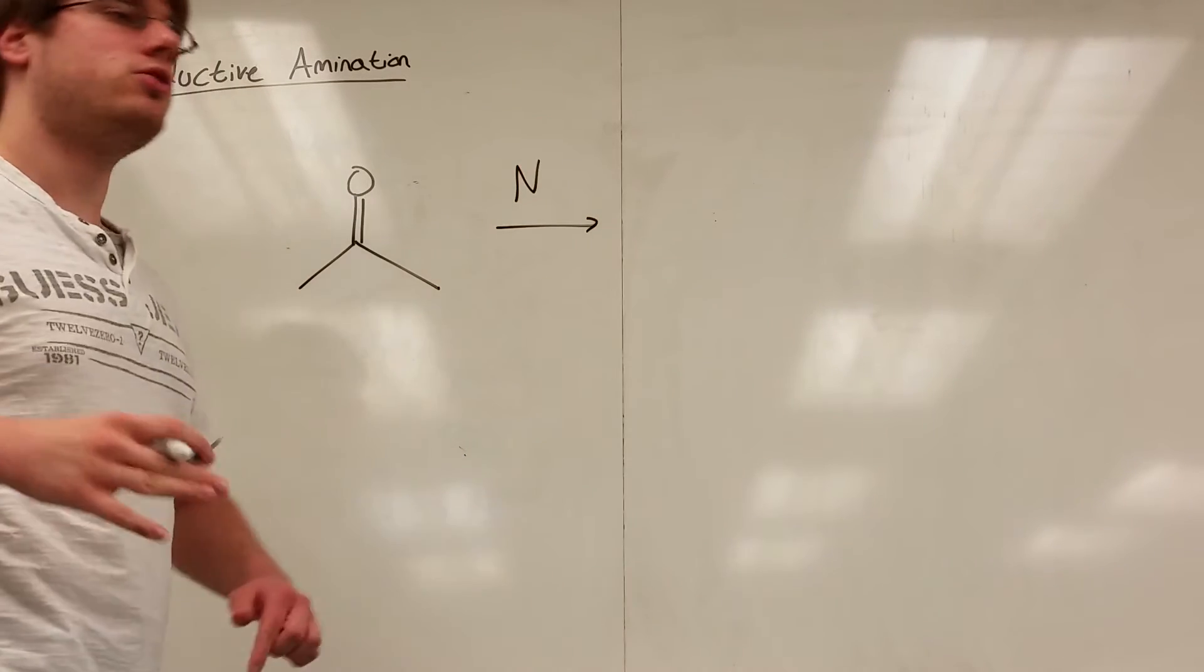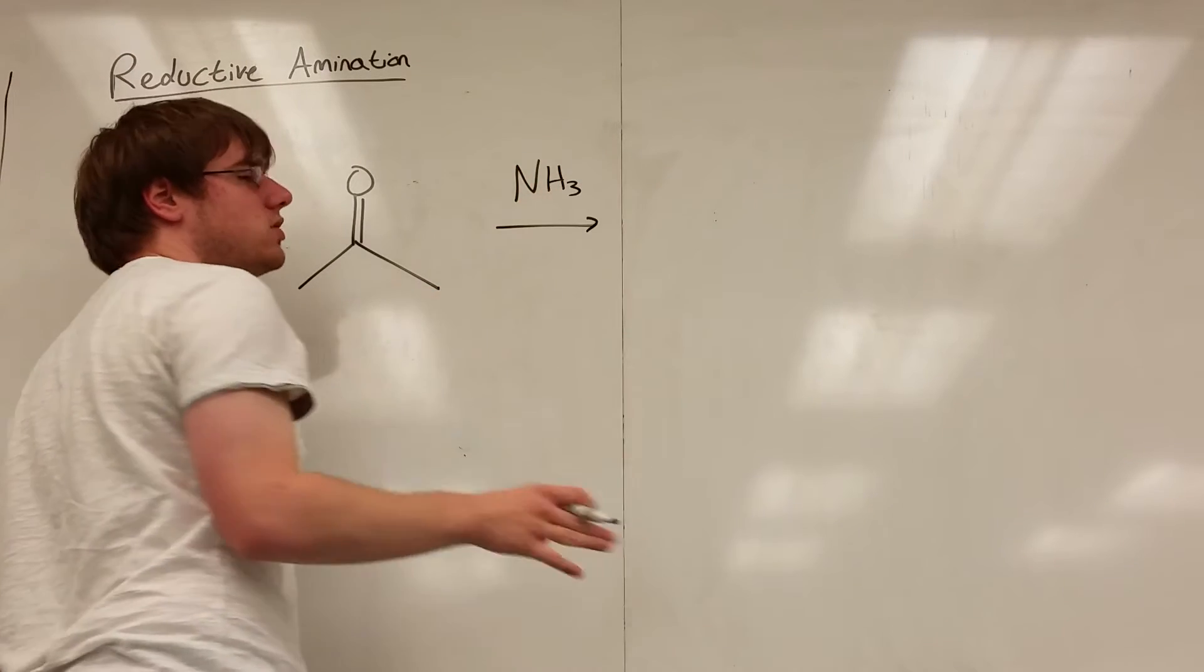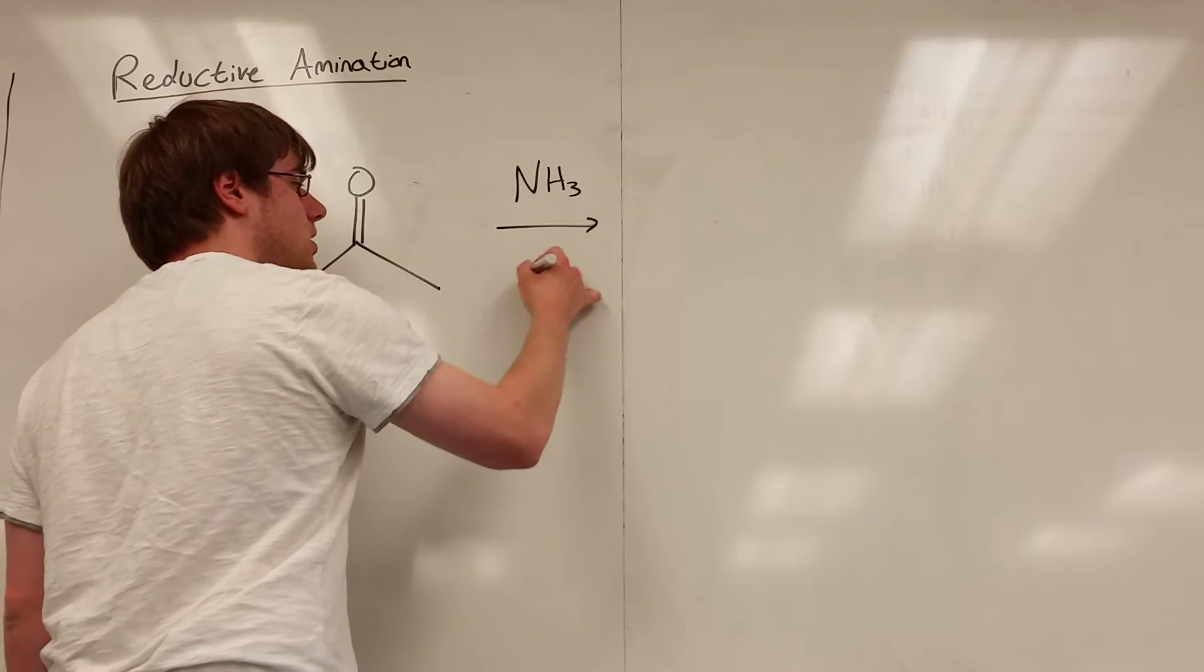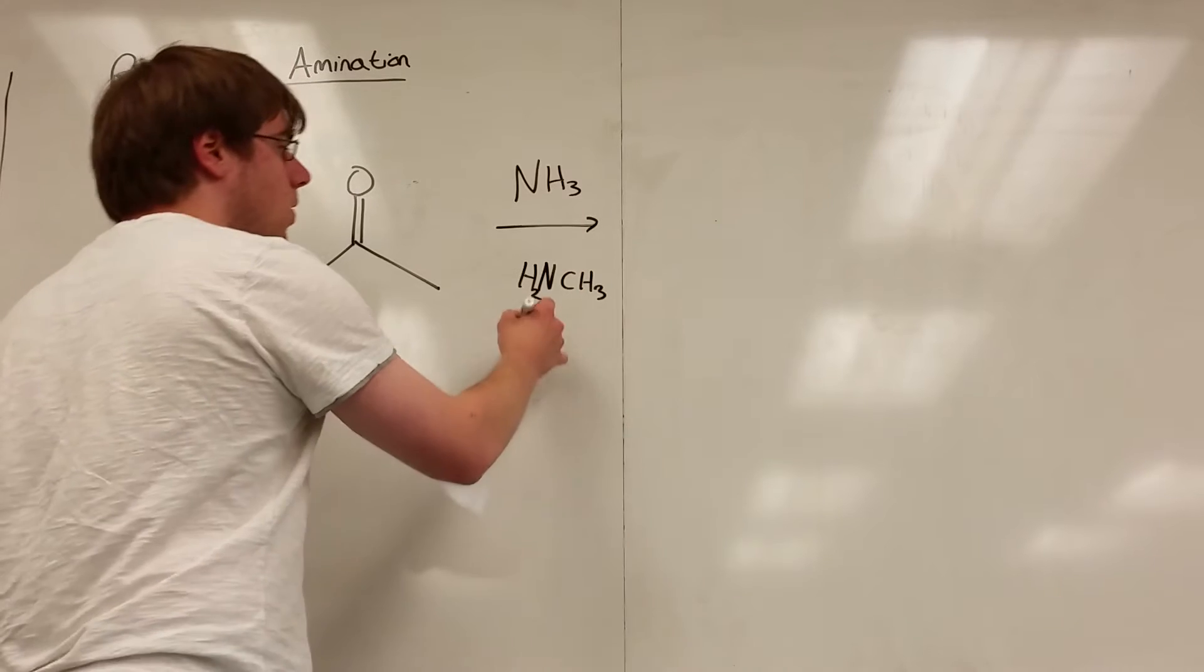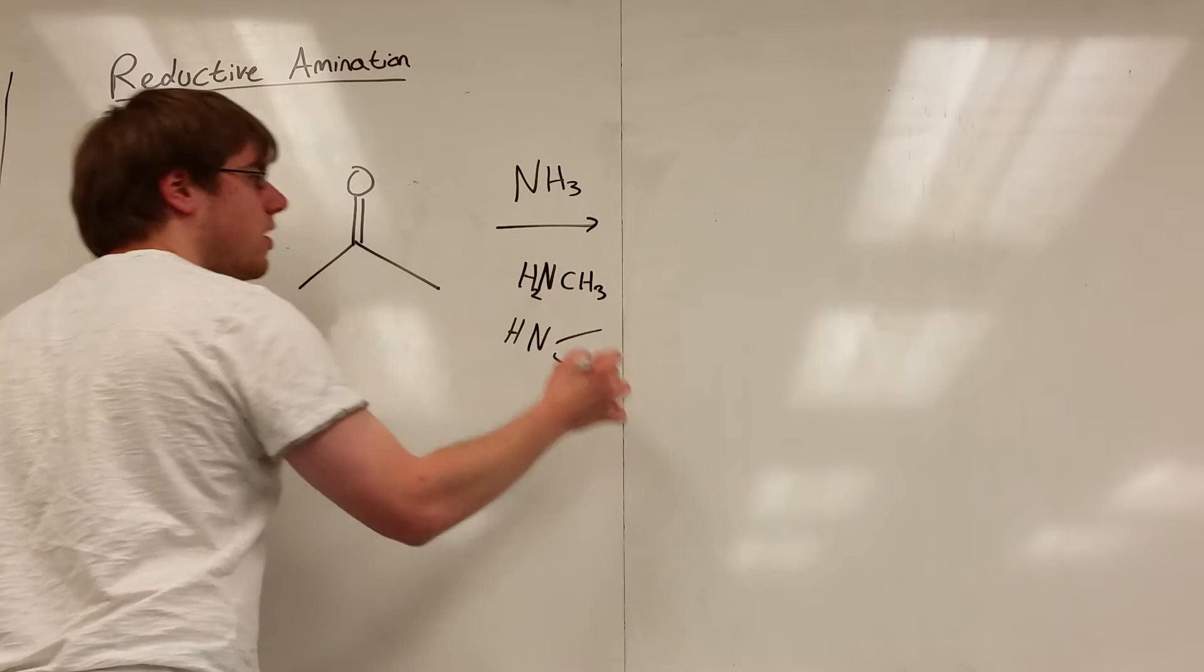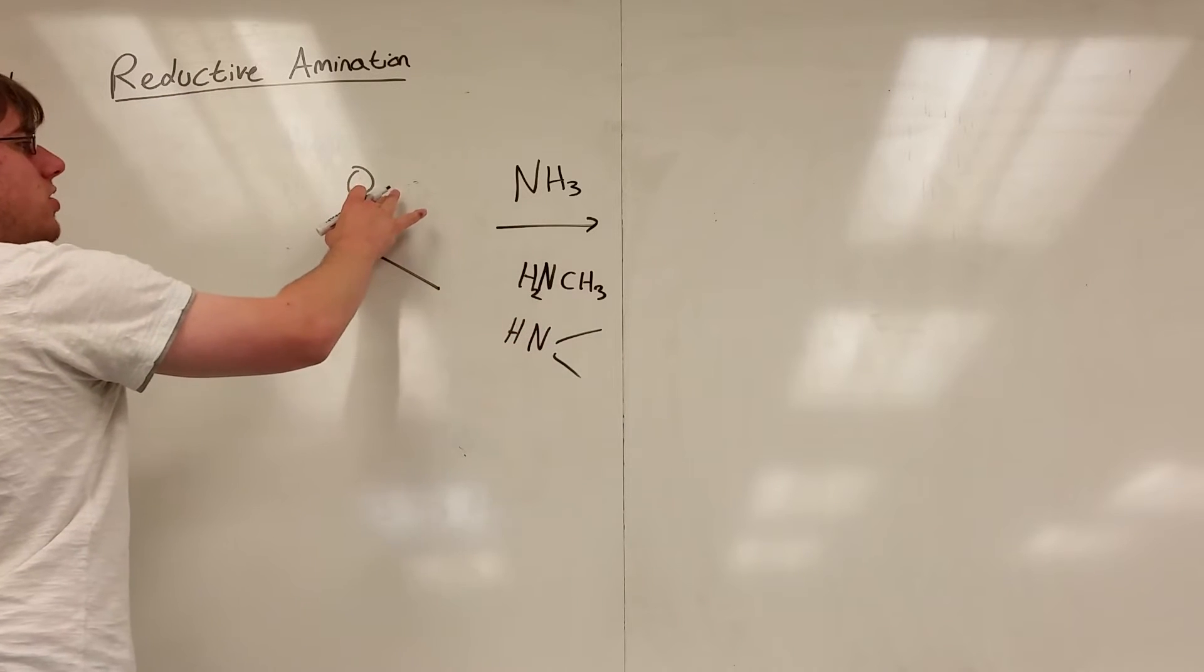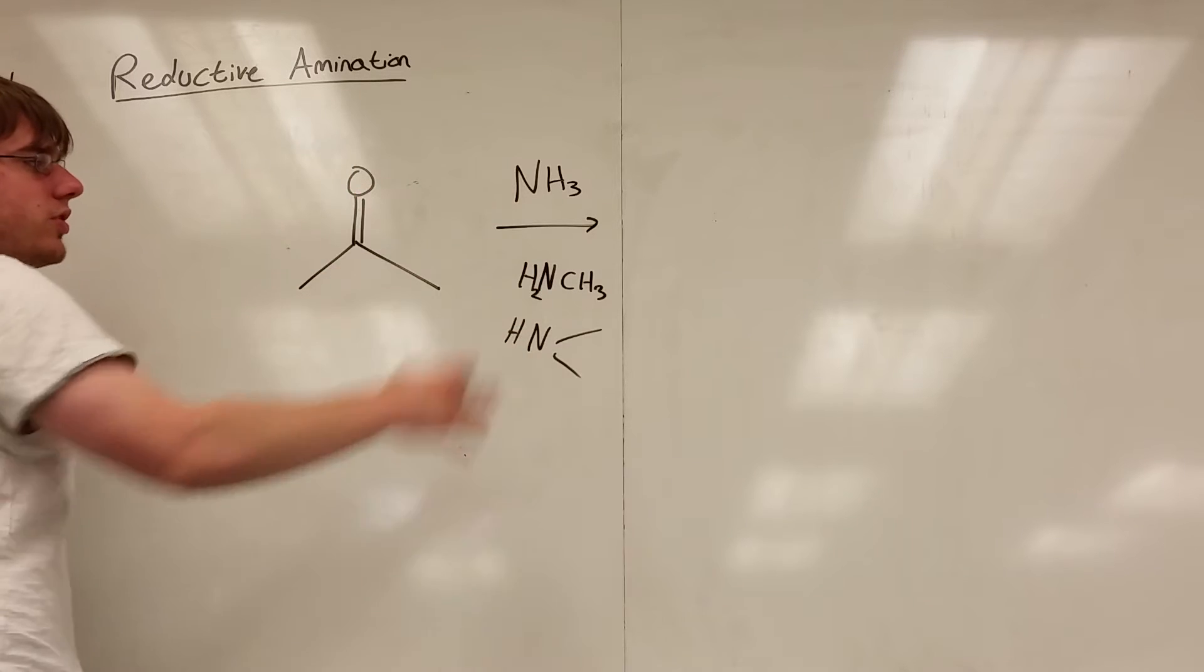Now if you just want it to be nitrogen then you just do NH3, but if you want that nitrogen to have carbons attached then you could do NH2 and then a CH3, and that would add a nitrogen with methyl, or NH and then two methyls. And in each of those respects what you're basically going to do is you're going to erase that oxygen and put the nitrogen on in place of it.